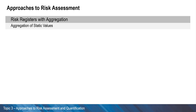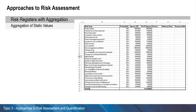Let's take a look at aggregation of static values. An example is given here. The impact on occurrence is multiplied by the probability of occurrence to give an average impact. Note that risks may also be assigned to categories — for example, geography, department, or related to a specific risk driver. This way, they can be aggregated and presented by category, as well as in total.